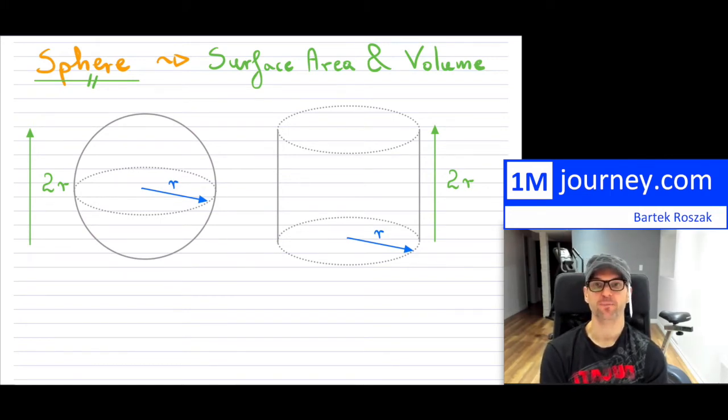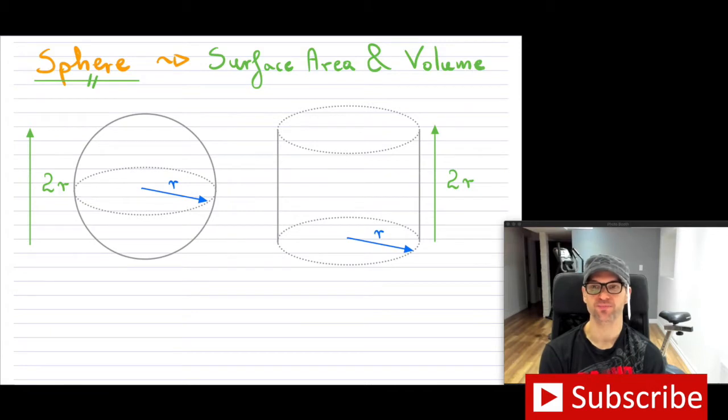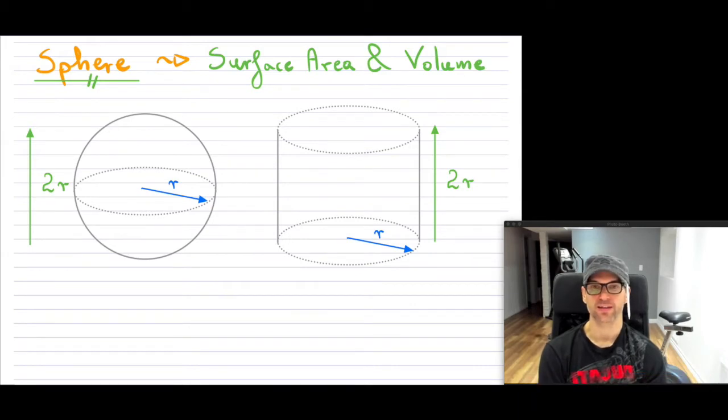So first of all, the sphere—it has actually been shown a little while back by Archimedes, and you can look that up if you like—that if you take a sphere and then you take a cylinder, notice that the sphere and the cylinder have the same radius, and they also have the same height.